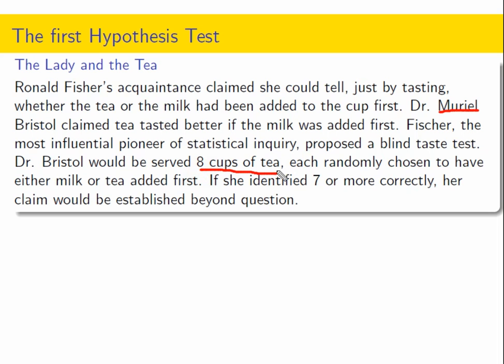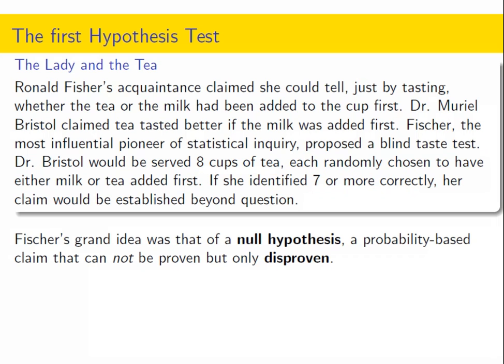We're changing that experiment slightly to go better with our course topics, but the probabilities are close. Basically, if they just flip a coin — heads is milk first, tails is tea first — and serve her eight cups of tea, six, seven, or all eight of them could have the milk first, or vice versa. She tastes each and says whether milk or tea was added first. If she answers seven or more correctly, Fisher said that would be good evidence.